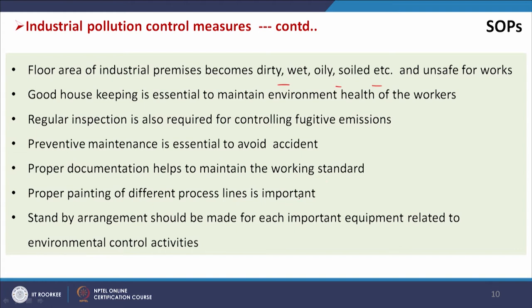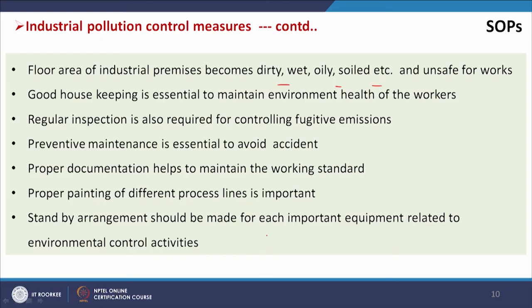Proper color-coding of different process lines — such as steam, water, and gas lines — ensures that anyone working in the area is aware of the nature of fluid passing through and can take necessary precautions, avoiding accidents. Standby arrangements should also be made for each important piece of equipment related to environmental control activities, because any equipment can become non-functional at any time, and alternate arrangements prevent disruption to ETP activities.